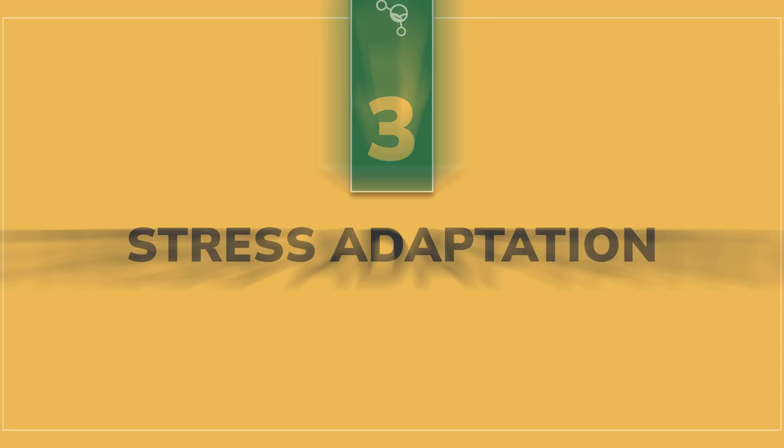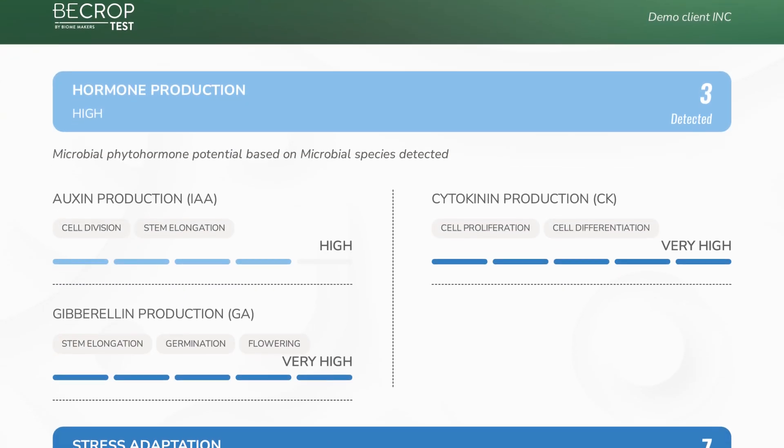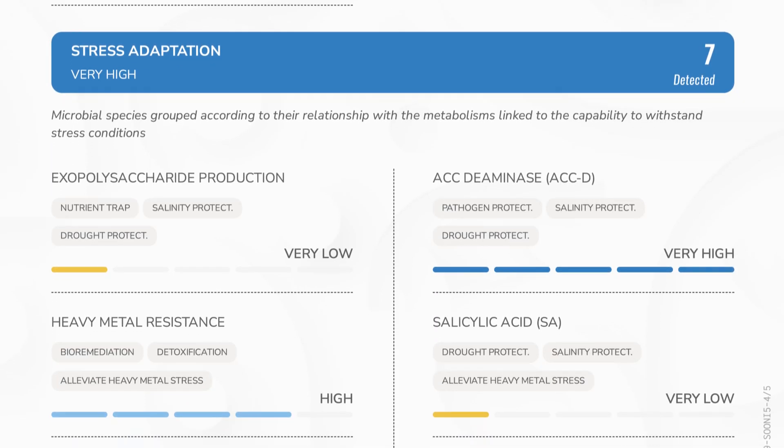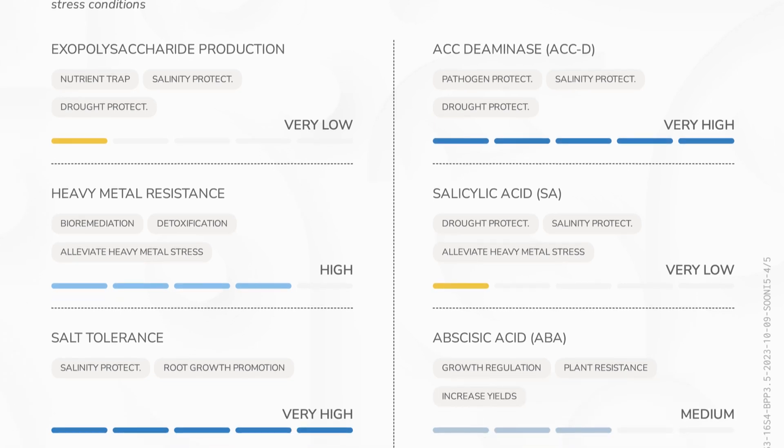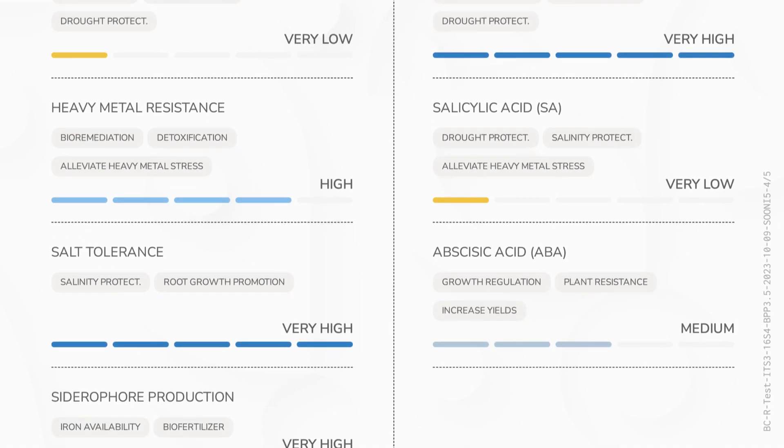The third parameter we monitor closely is stress adaptation. We look at a series of about seven secondary metabolites and hormones that deliver information about the plant's ability to protect itself from stress, whether that is resistance to heavy metal uptake, drought pressure, pathogen pressure, or salinity. We look at different hormones and secondary metabolites like exopolysaccharide production, soil texture, the ability for the soil to keep its structure in the face of these stresses, and hormones like ACC-Deaminase, which is a really important hormone for stress adaptation, and a few more.